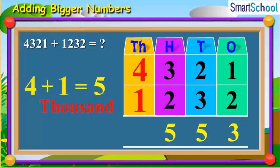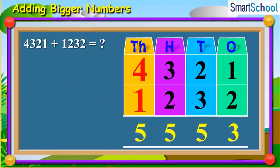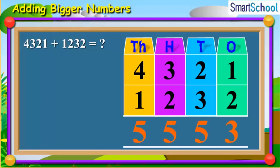Now, place the 5 at the thousands place. So, our final answer will be 5,553.